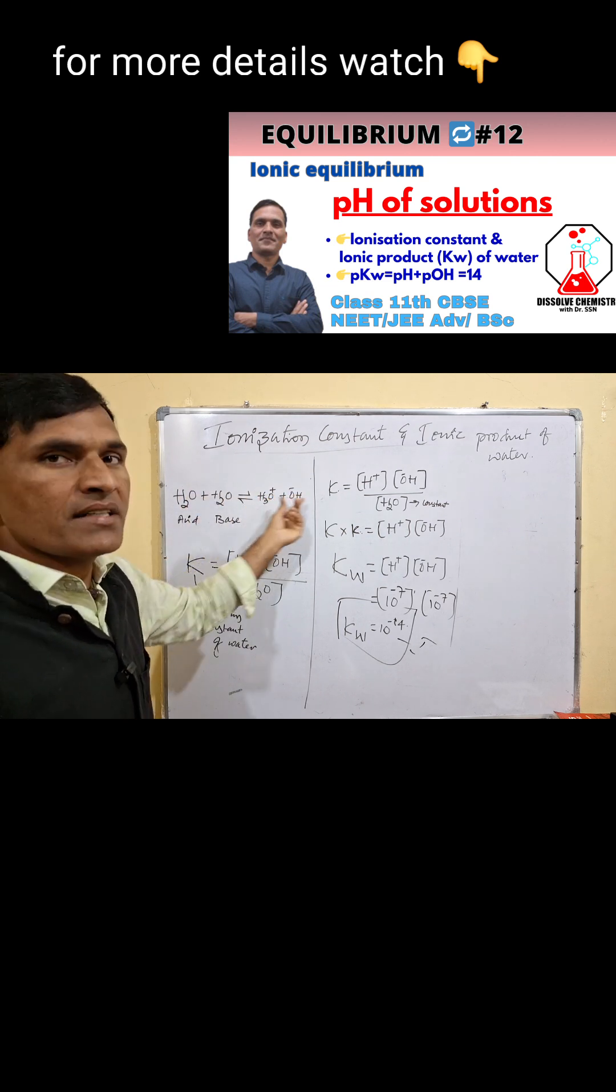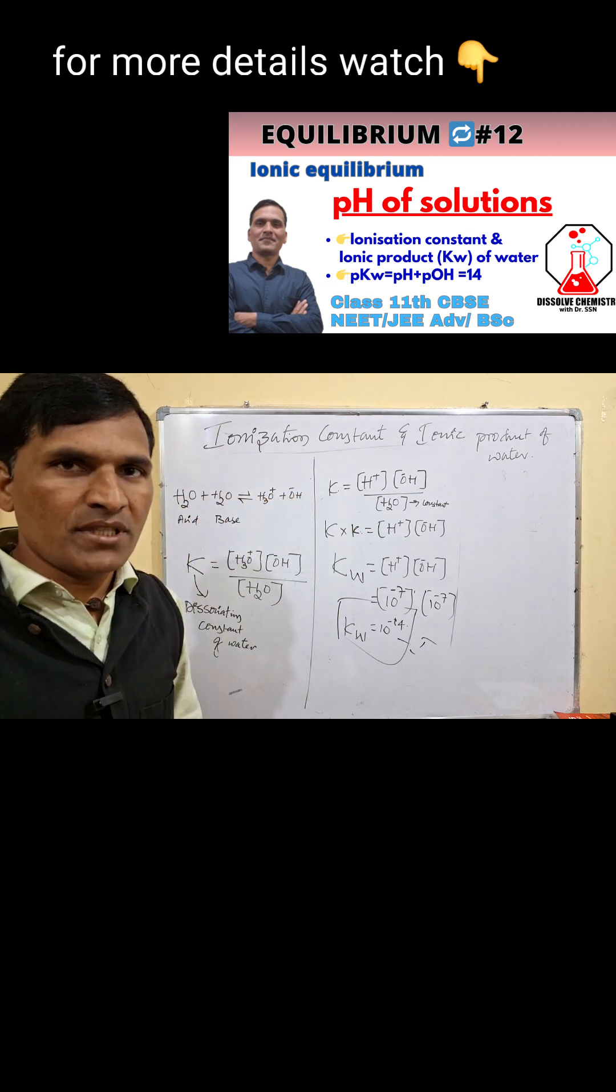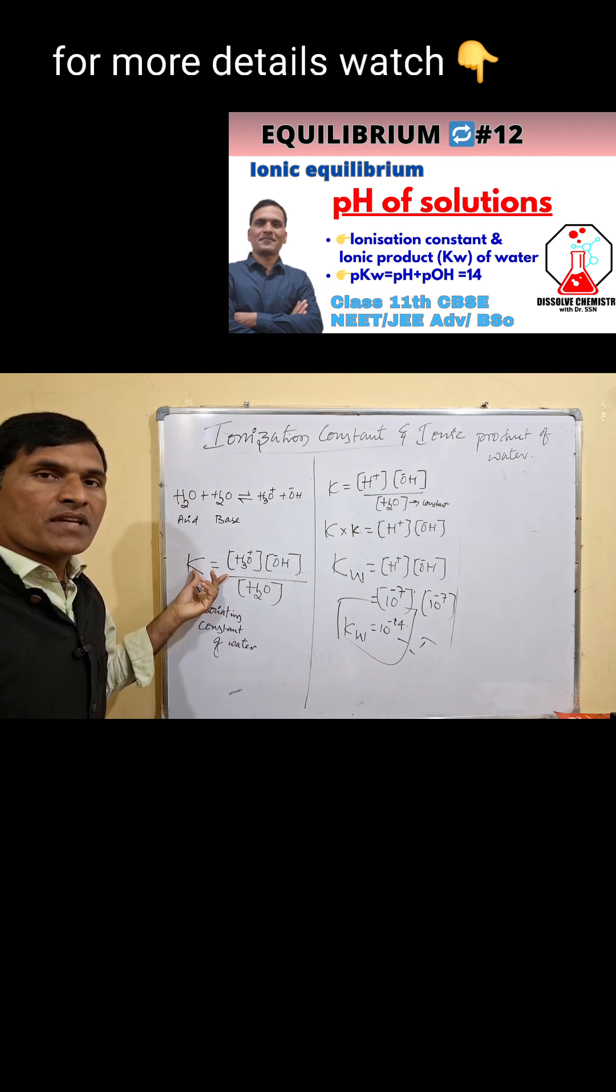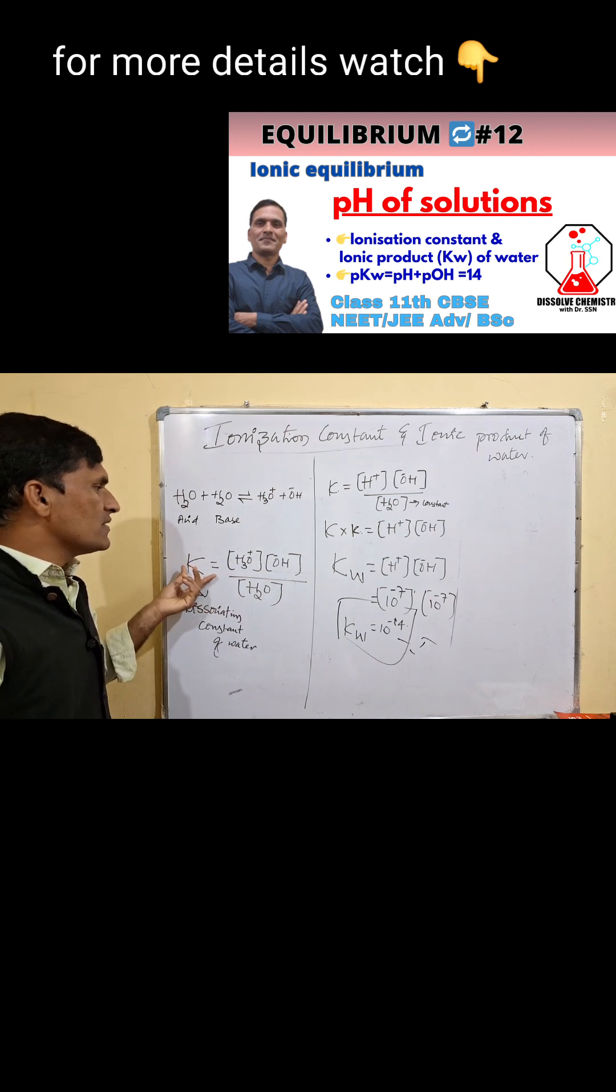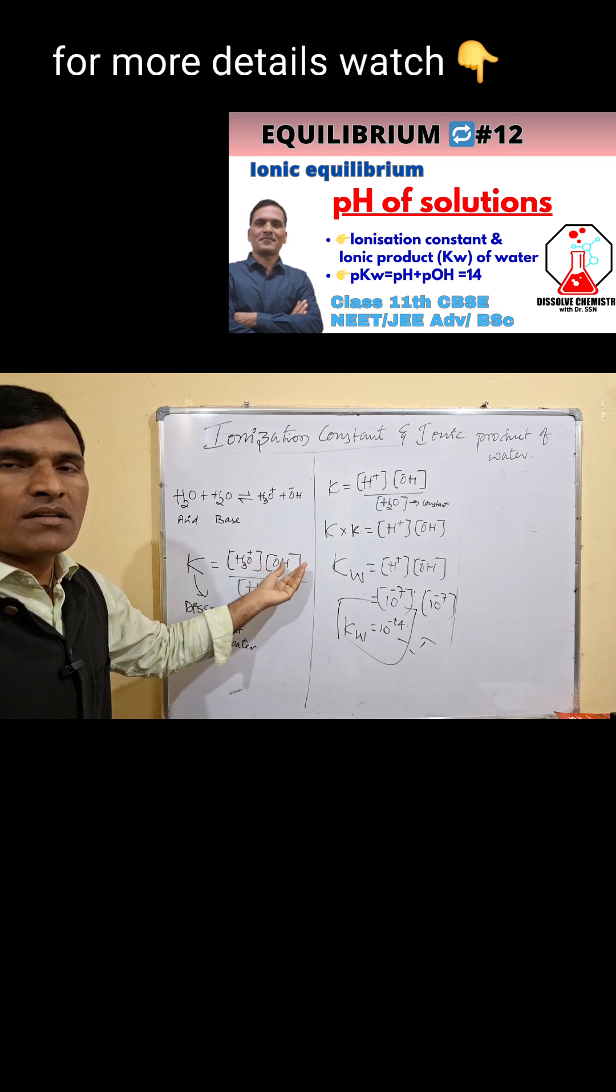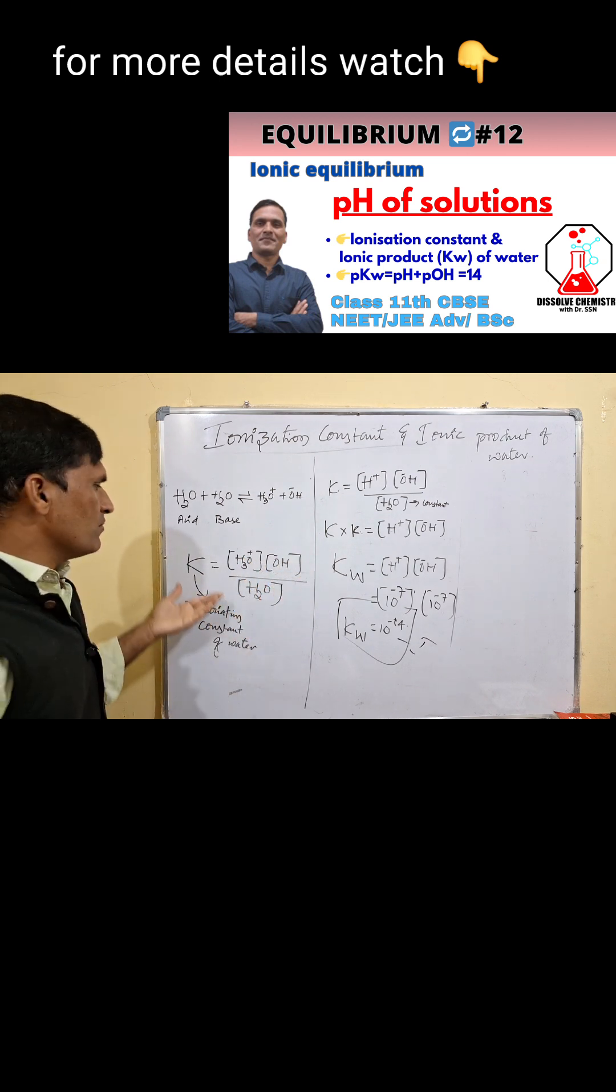They will exchange protons and dynamic equilibrium is established. We express this using the law of chemical equilibrium as K equals the product of concentration of the dissociated form by undissociated form.